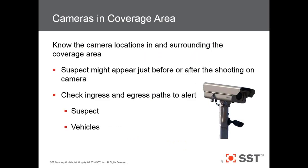Knowing your cameras in the coverage area can be huge. You never know where the suspect is going to appear just before or just after the shooting on camera. We've had several cases where a person was caught on camera inside a mom-and-pop shop just before the shooting, getting some liquid courage to go do his deeds. Officers go back to the stores, look at surveillance tape, and find a person matching the clothing description. You can also check cameras for ingress and egress paths, since ShotSpotter sensors can articulate direction of travel and speed.